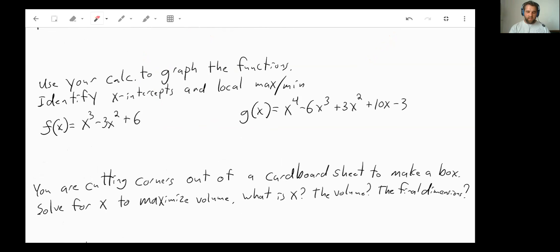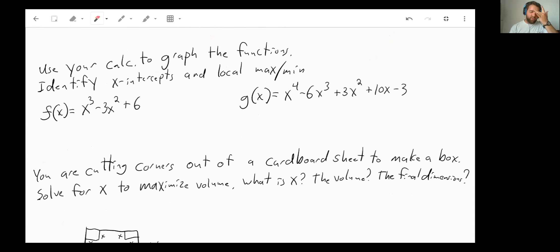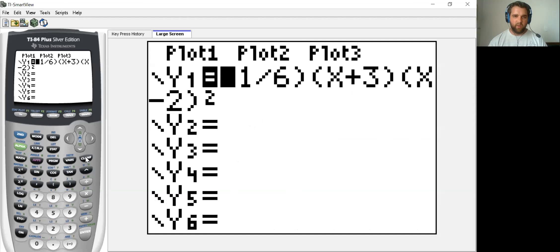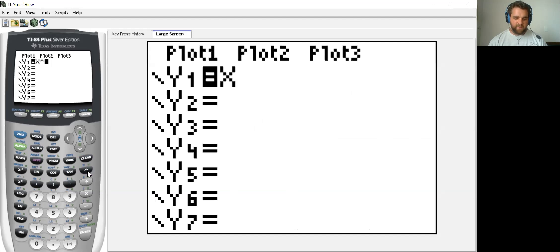So now we can use our calculator to graph these functions. Identify x-intercepts and local maximums and minimums. Let's just look at that first one here. Let me pull up my graphing calculator for you. So here we've got our graphing calculator. Let's come on back to our y equals. So our first graph was x to the third minus 3x squared plus 6.